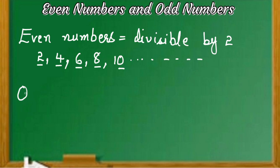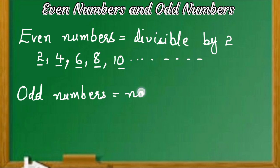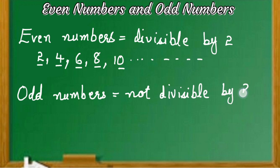Similarly, in odd numbers — odd numbers are the numbers which cannot be divided completely by the number 2. Also, the numbers in which the unit digit is either 1, 3, 5, 7, or 9 are called odd numbers.